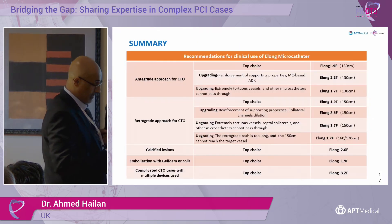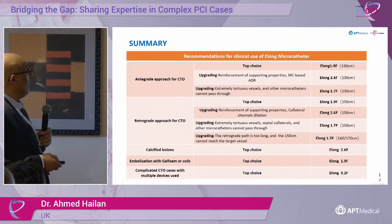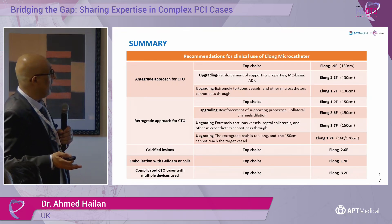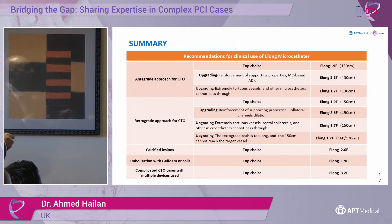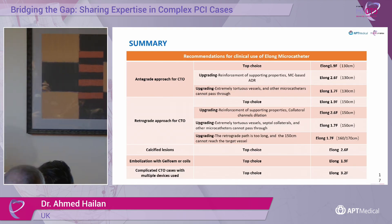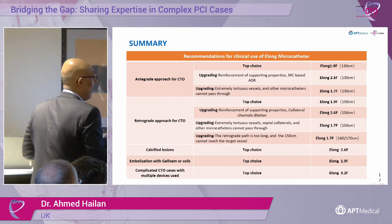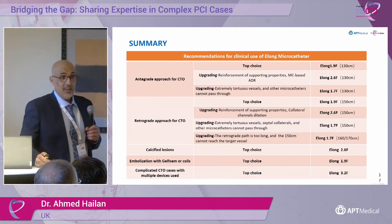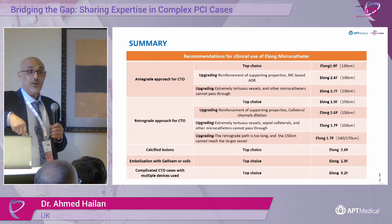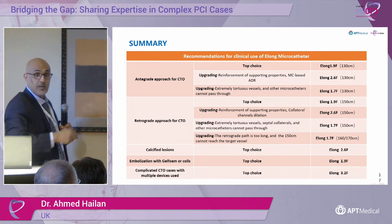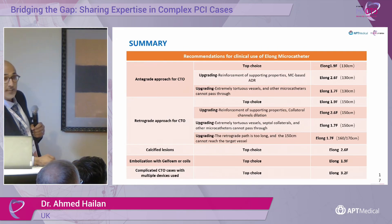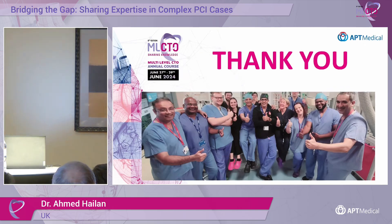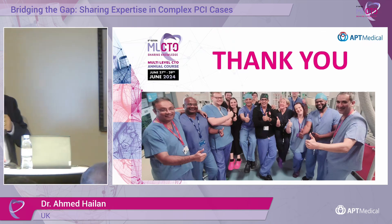In summary, for an anterograde CTO approach - antegrade dissection re-entry or wire escalation - the best Elong catheter choices are 1.9, 2.6, or 1.7 French. One thing I particularly like about the 1.7 is that it comes in 170 centimeters, which is very useful for cases like LIMA to RCA where you previously struggled with length - it can come through the LIMA all the way to where you need it to be. Thank you very much - happy to take any questions.